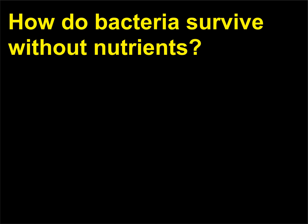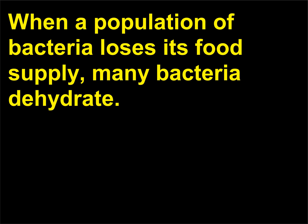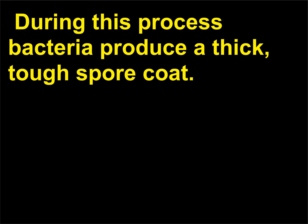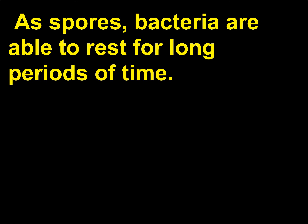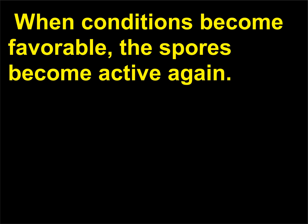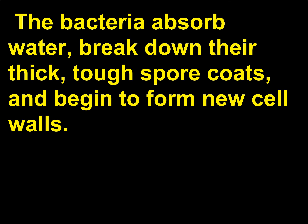How do bacteria survive without nutrients? When a population of bacteria loses its food supply, many bacteria dehydrate. During this process bacteria produce a thick, tough spore coat. As spores, bacteria are able to rest for long periods of time. When conditions become favorable, the spores become active again — the bacteria absorb water, break down their thick tough spore coats, and begin to form new cell walls.